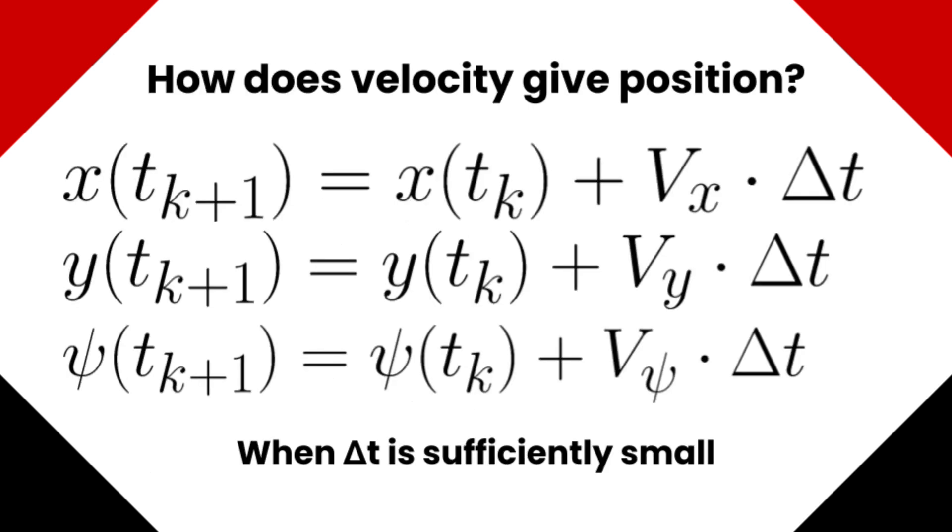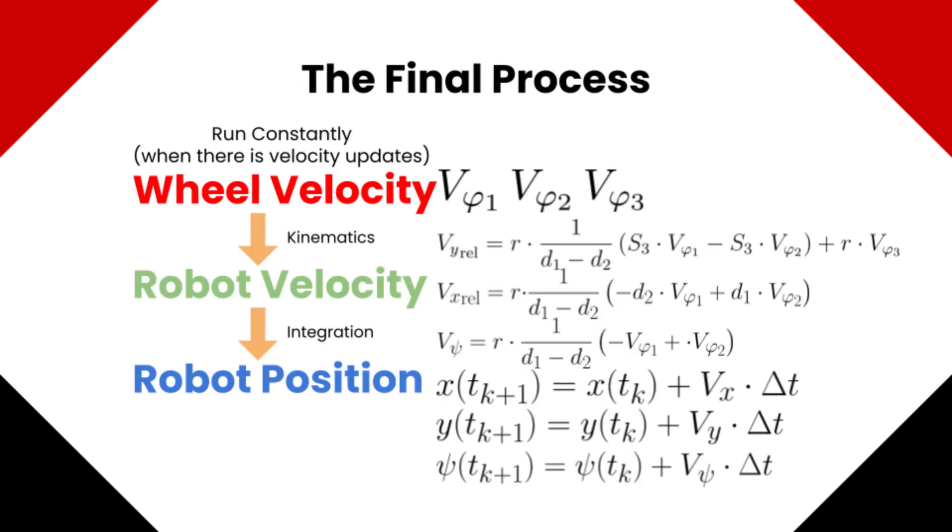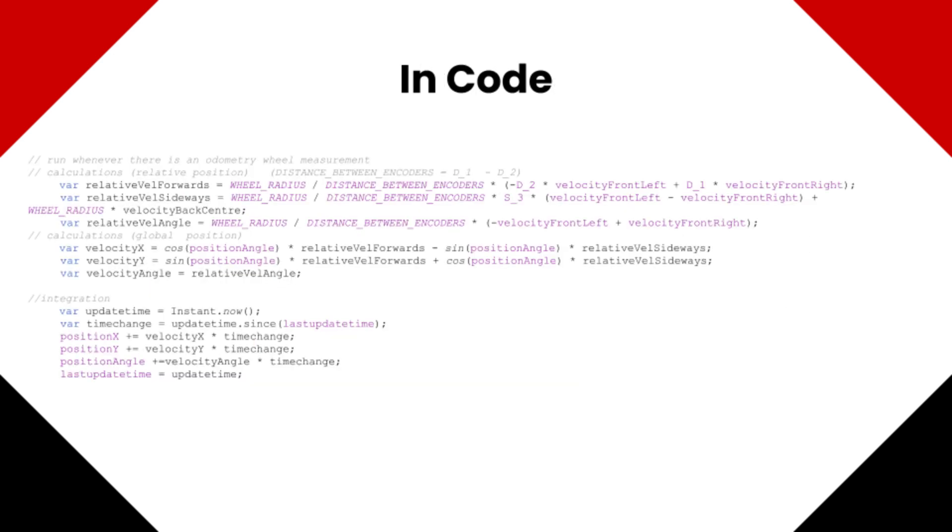To summarize, the process of localization uses deadwheel encoder data to find velocity, which is used to generate accurate position estimates. This can easily be implemented onto a robot using some basic code that updates the robot's position real-time. That's it for the second video of software on odometry. Thank you for watching!